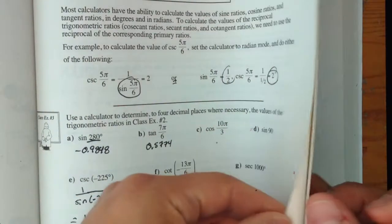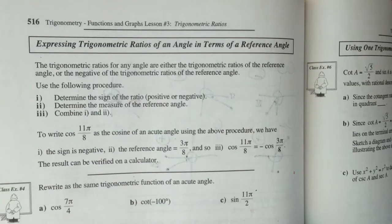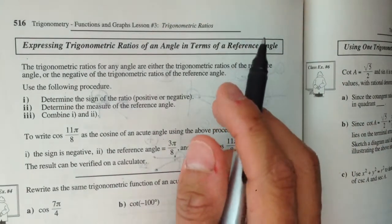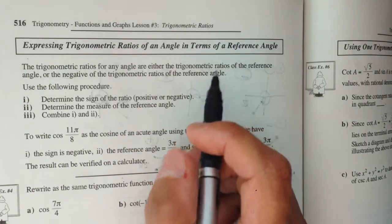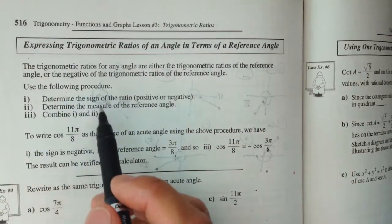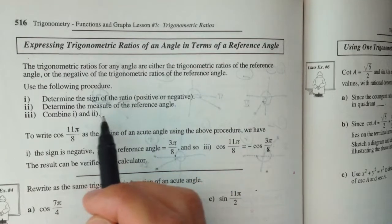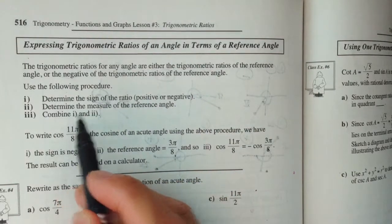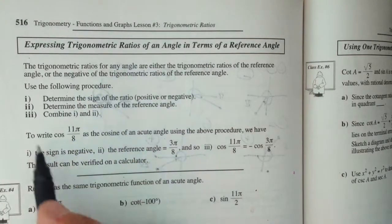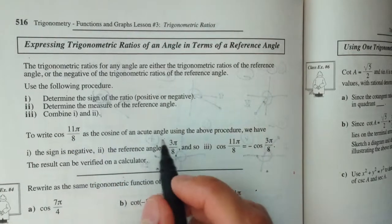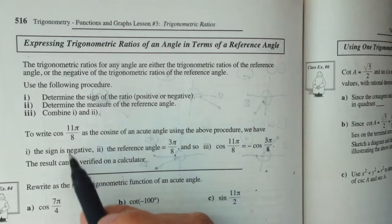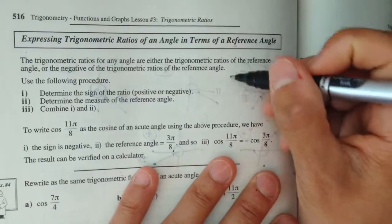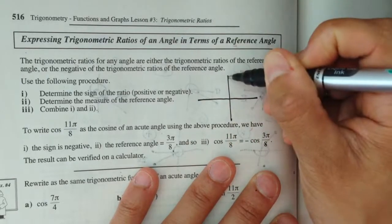Alright, so next we're going to be looking at expressing trig ratios and angle in terms of a reference angle. So if I know my reference angle, can I express that ratio in terms of my reference angle? In order to do that, we just follow this approach. The first thing is determine the sign of the ratio.